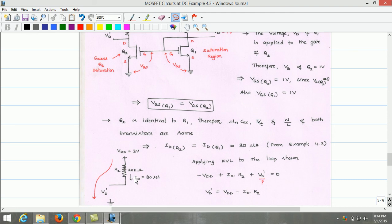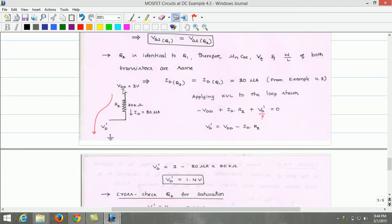Now, to determine the value of the new drain voltage, we can apply KVL to the portion of the circuit of Q2 transistor. Applying KVL, we get minus Vdd plus Id times R2 plus Vd' equals 0.